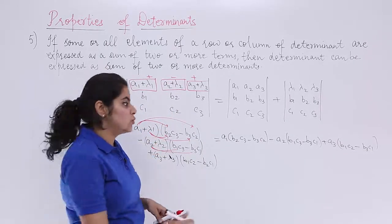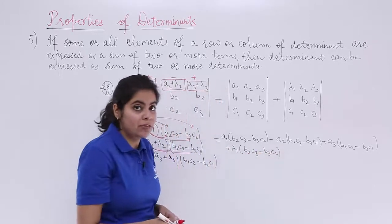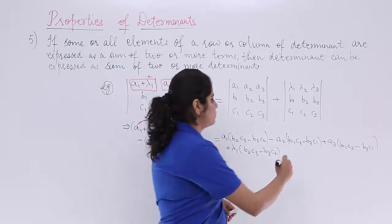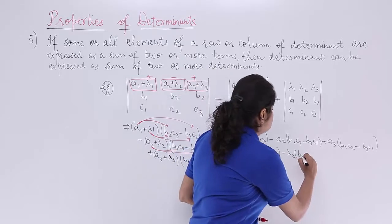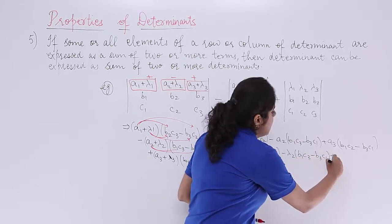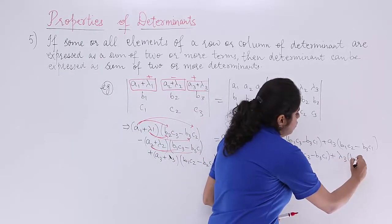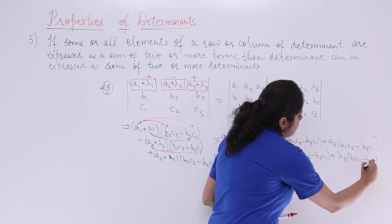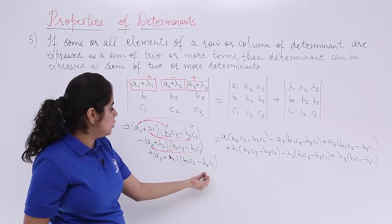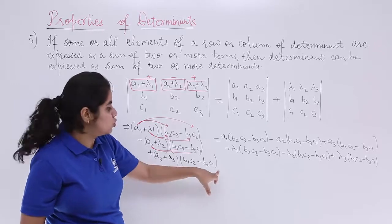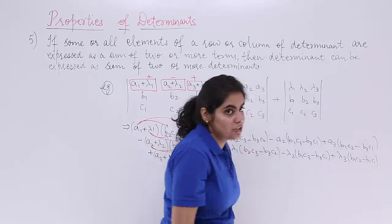The lambda terms give: plus lambda1·(b2·c3 minus b3·c2), then minus lambda2·(b1·c3 minus b3·c1), and finally plus lambda3·(b1·c2 minus b2·c1). Note the correction: for lambda3 the factor should be b1·c2 minus b2·c1, not b3·c1.